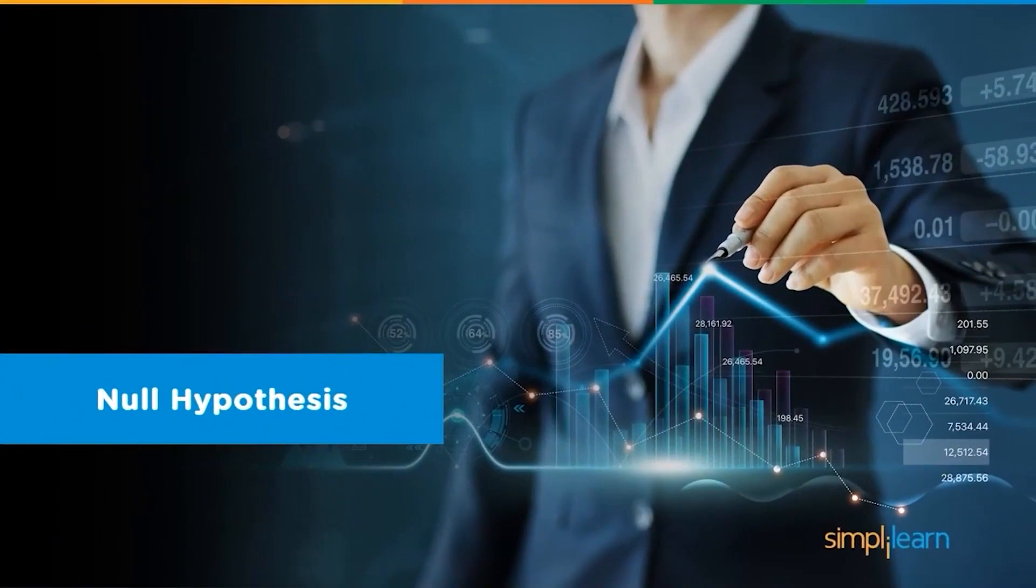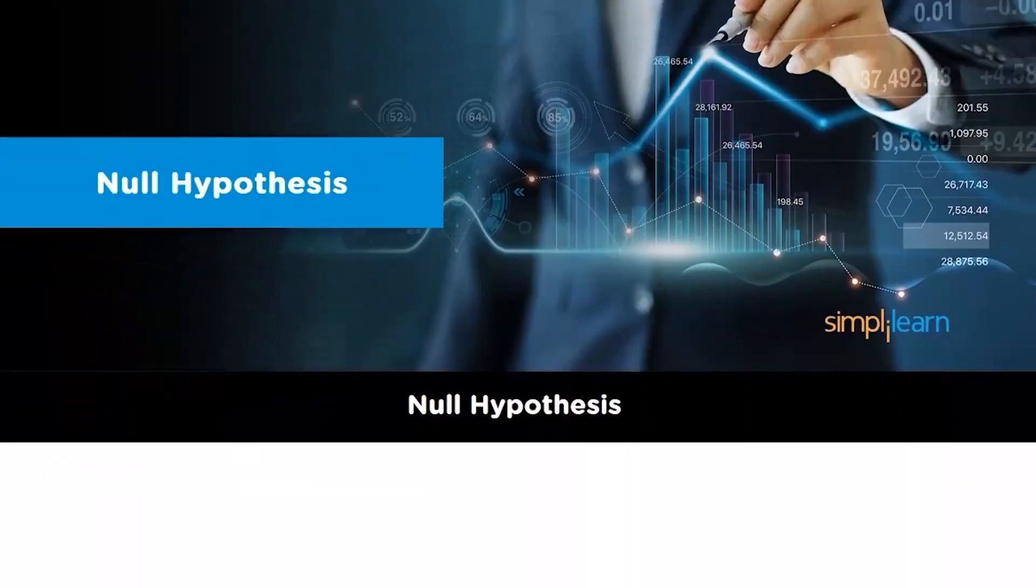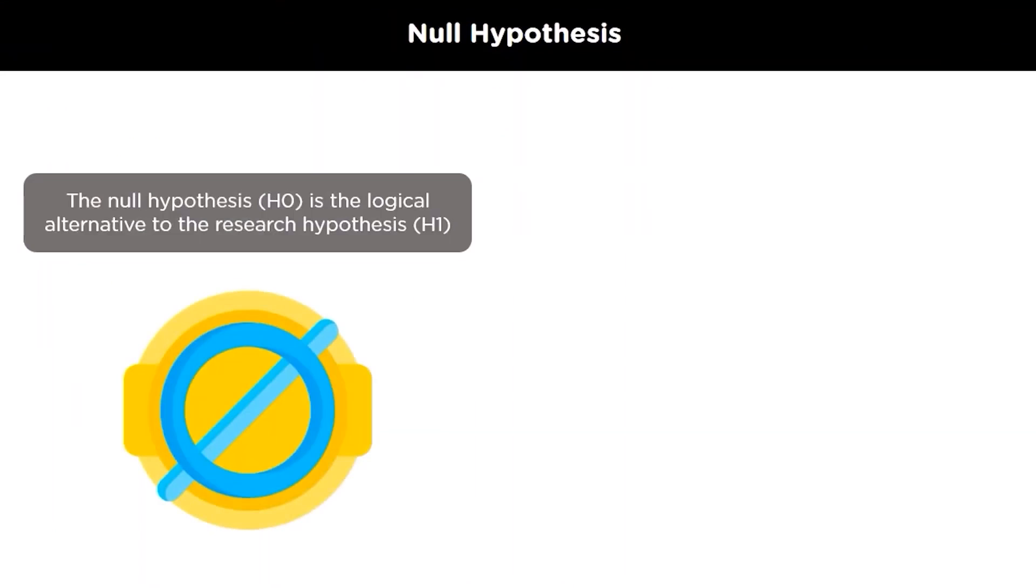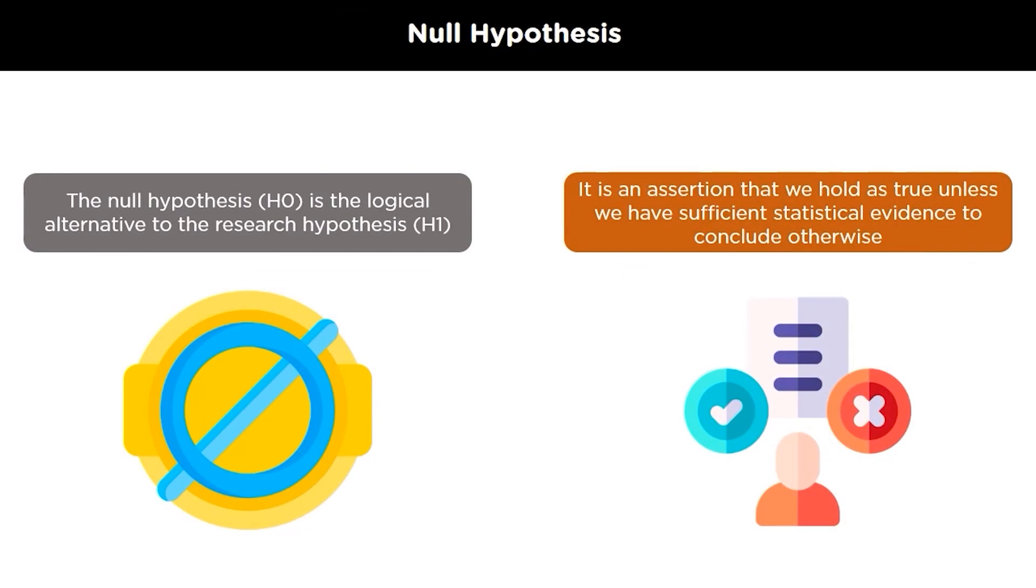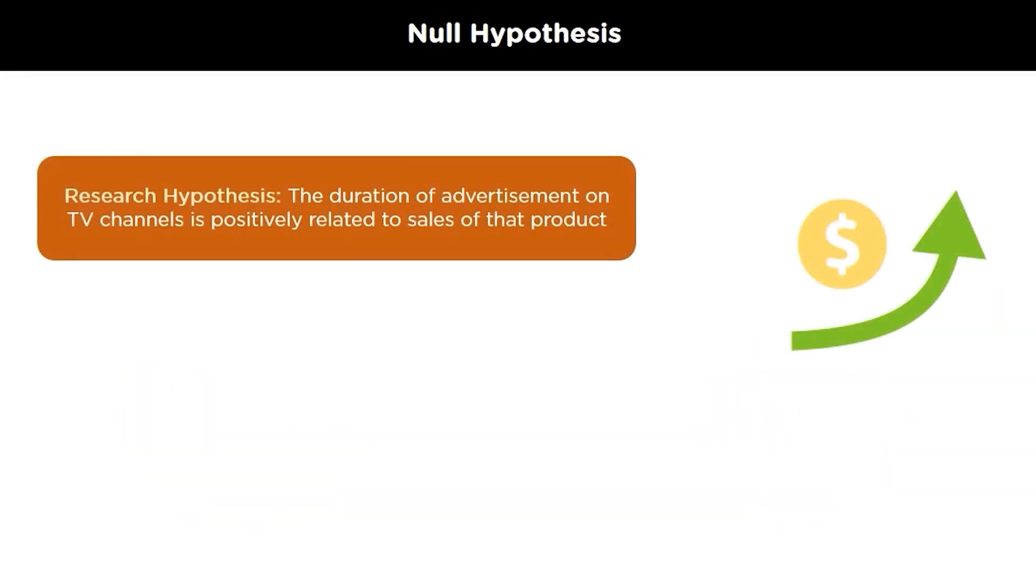Now we will understand what a null hypothesis and alternative hypothesis is. The null hypothesis is the assumption that an event will not occur. A null hypothesis has no bearing on the study's outcome unless it is rejected. H0 is a symbol for null hypothesis. The alternative hypothesis or a research hypothesis is the logical opposite of the null hypothesis. The acceptance of the alternative hypothesis follows the rejection of the null hypothesis.